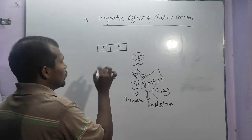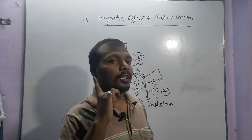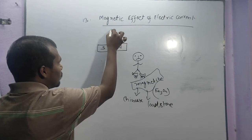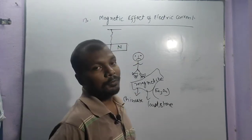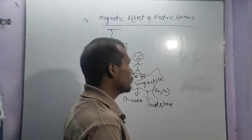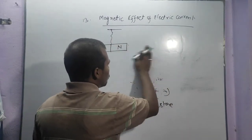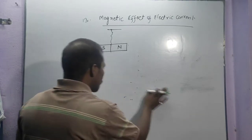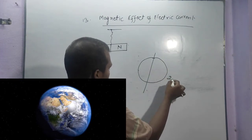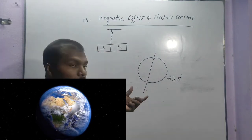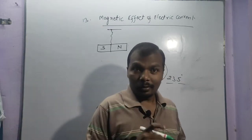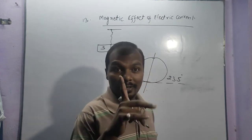This is the North Pole and South Pole. Now, one question arises: this is a magnet — if we tie it with a thread, why does it always indicate towards the North Pole? Why does it always show the North Pole? So listen — our Earth is inclined at 23 degrees on its own axis. Earth has a total of 4 poles.